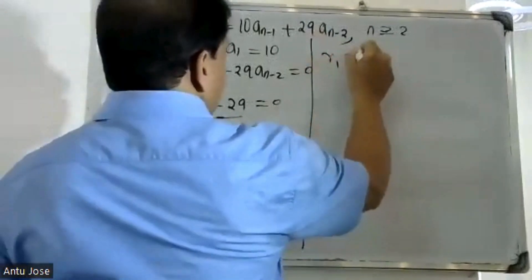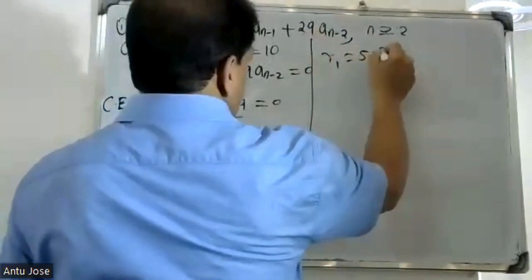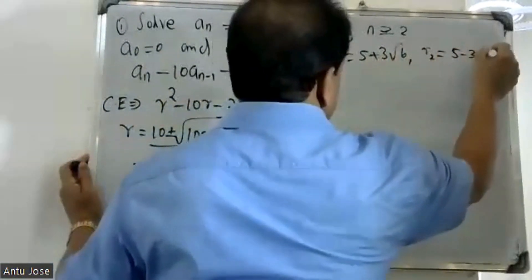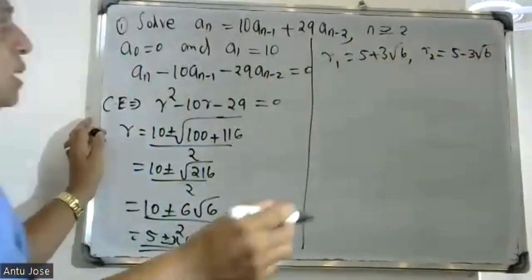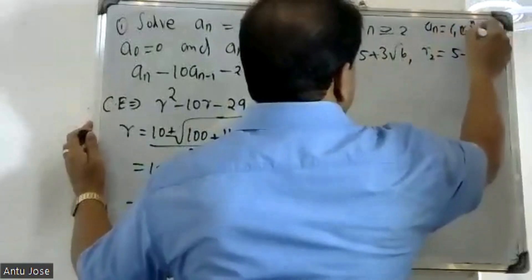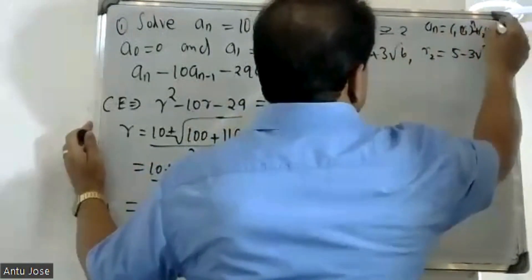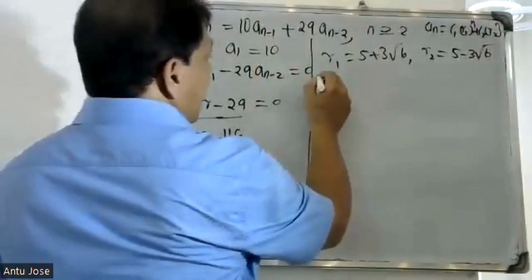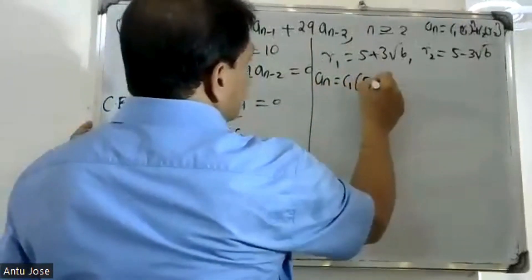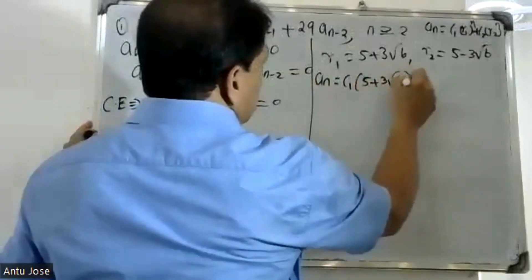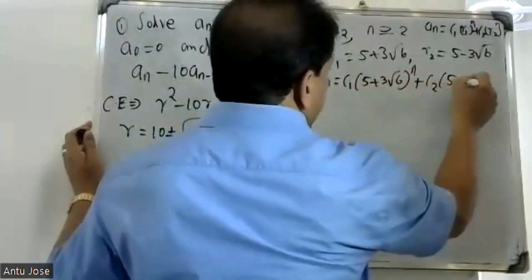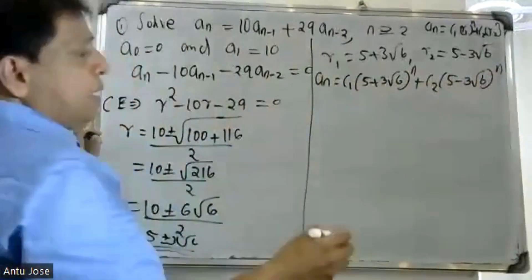Our roots are R₁ = 5 + 3√6 and R₂ = 5 − 3√6. The roots are real and distinct. Using the general formula for real distinct roots: aₙ = C₁·(5 + 3√6)ⁿ + C₂·(5 − 3√6)ⁿ. This is our general equation.